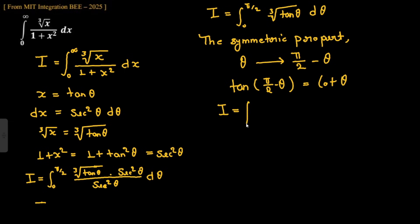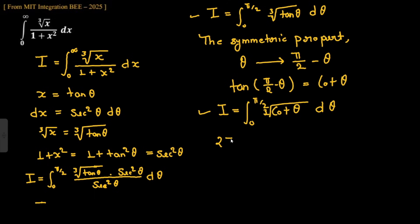So the integral I also equals ∫₀^(π/2) cube root(cot θ) dθ. Now we add these two expressions for I.